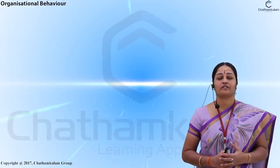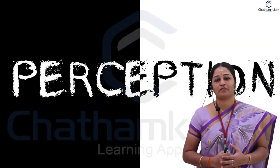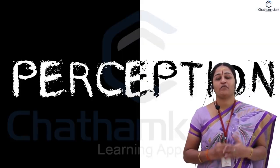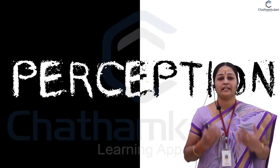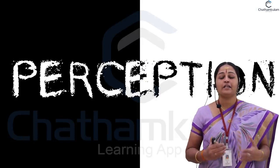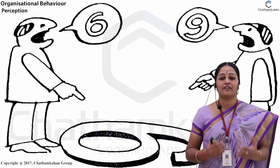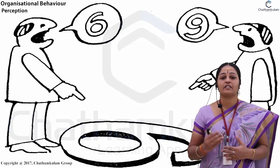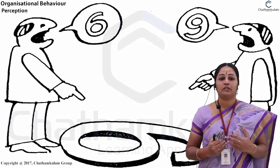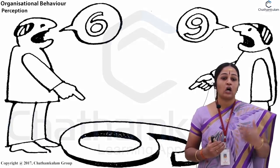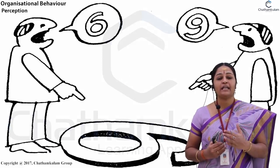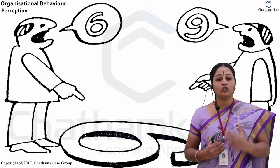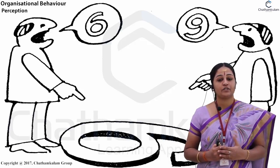The next psychological process is perception. We use this term very commonly in our day-to-day life. Perception is defined as the process by which an individual selects, organizes, and interprets stimuli into a meaningful and coherent picture of the environment in which he lives.